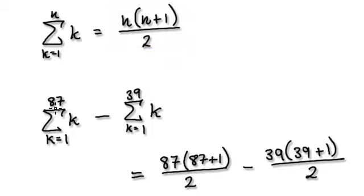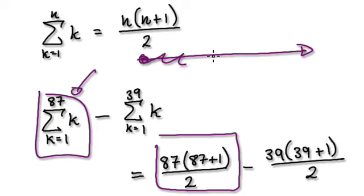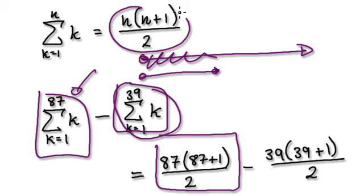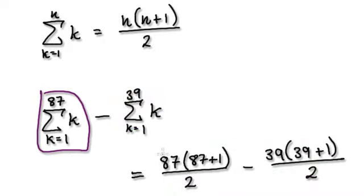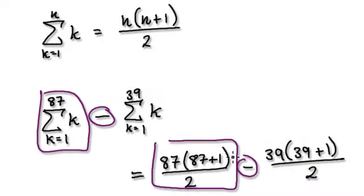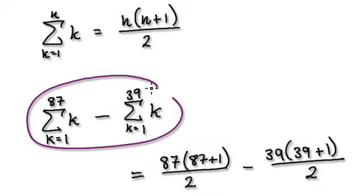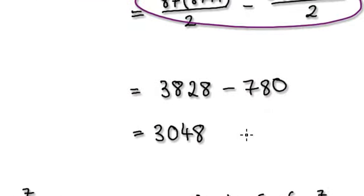To evaluate this, you can use this formula. This bit here, while using the formula, will take you to here. This whole summation here is given by this, take away the whole summation here which is given by this. So the whole thing here is really you evaluating this, which will then take you to the answer here.